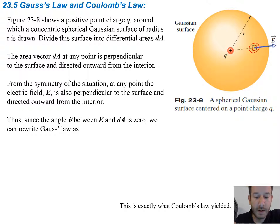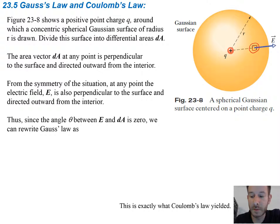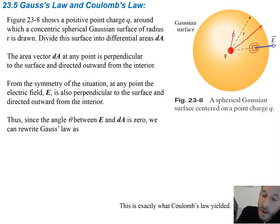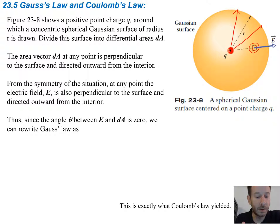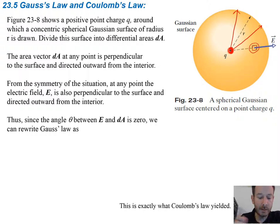From the symmetry of the situation at any point, the electric field E is also going to be perpendicular to the surface, because you have the electric field coming from a positive charge in the center and it's always going to be going straight outward. So it'll also be perpendicular to the surface of the sphere. Therefore the angle between E and dA is going to be zero, and Gauss's law is just going to simplify to E times dA.